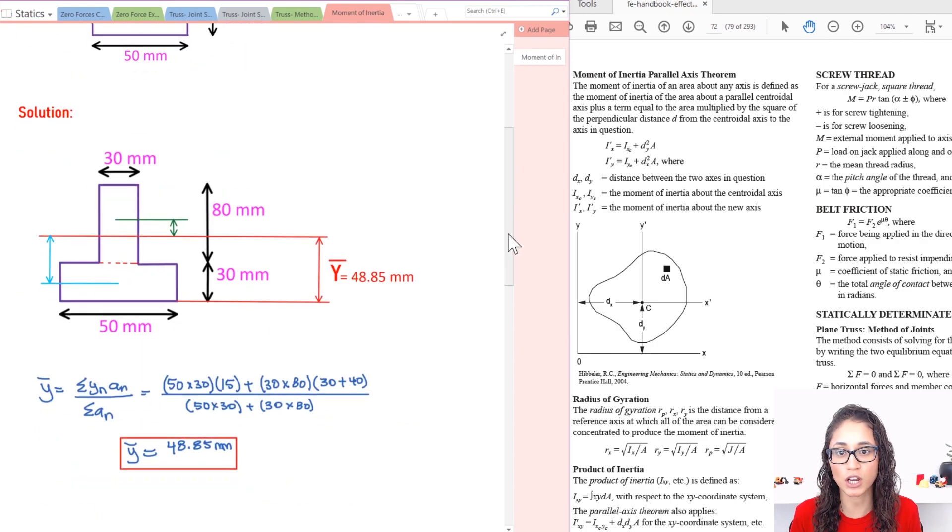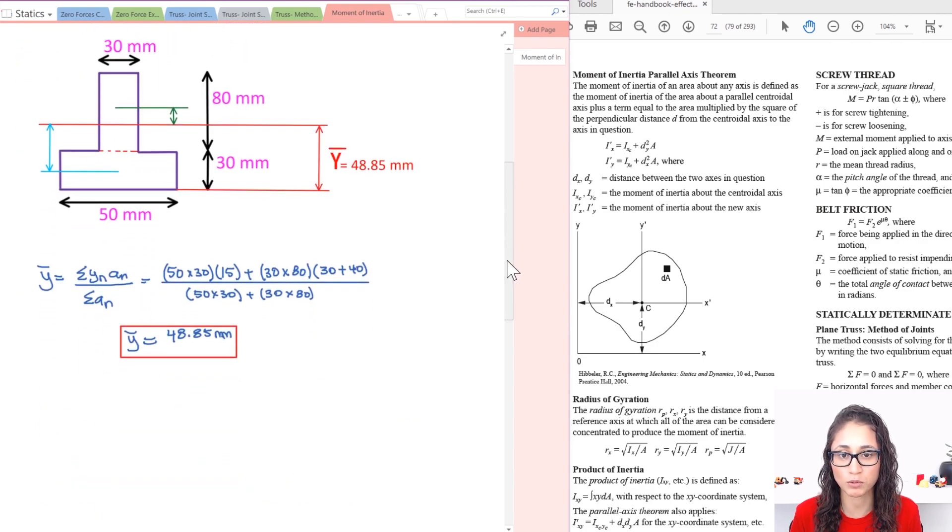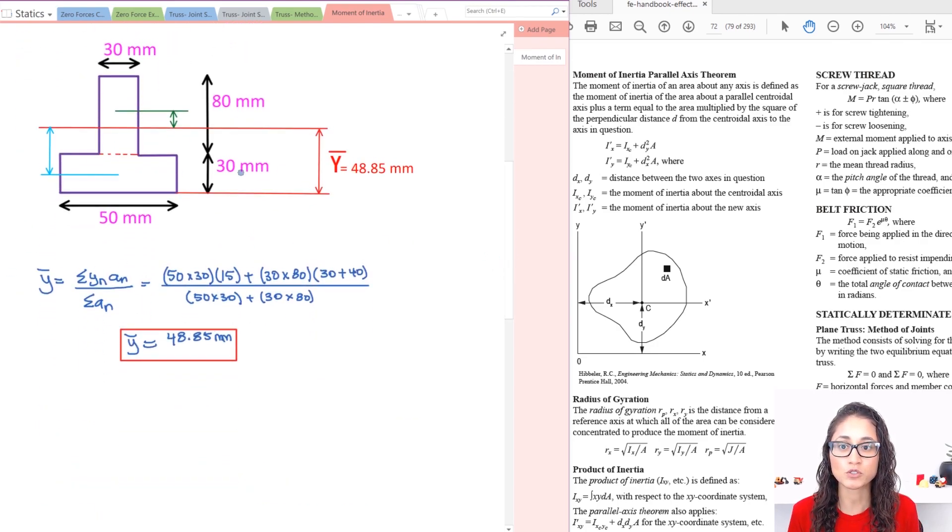So let's first check what we did in our previous problem, just kind of a quick review. So we calculated the centroid y-bar, right? We set up this to be our datum, so this is our y-bar. So now what we need to do is let's write the equation down for moments of inertia about the x-axis, and note here that this is x-axis. So we're trying to find the moment of inertia about this axis right here.